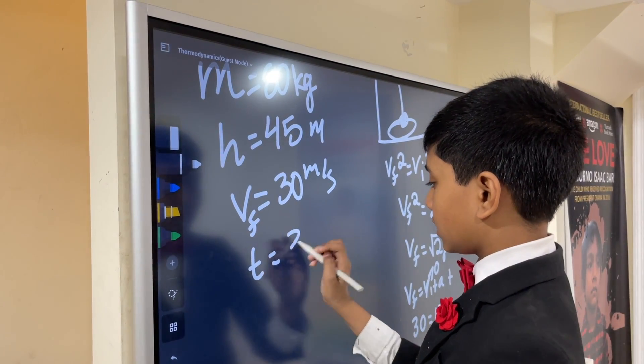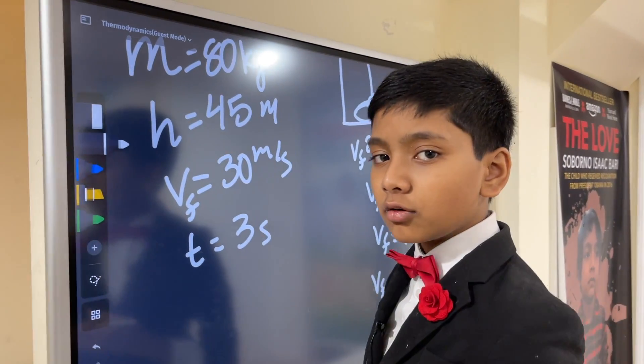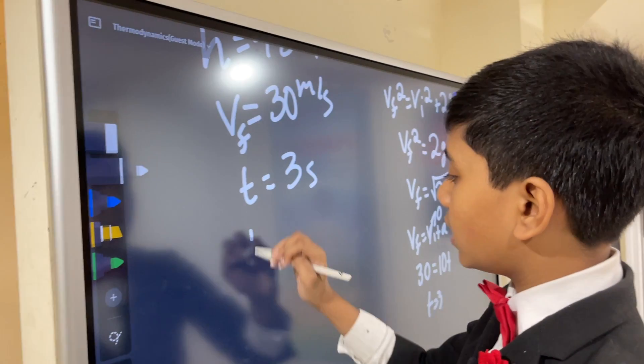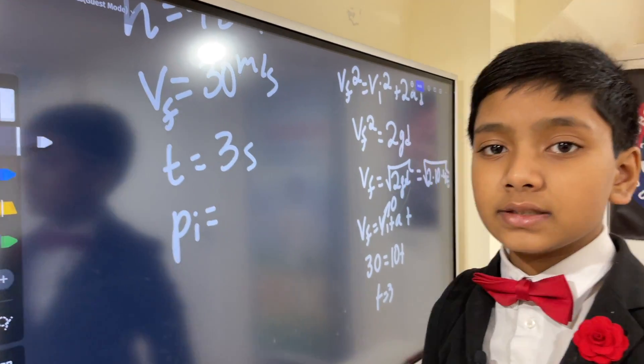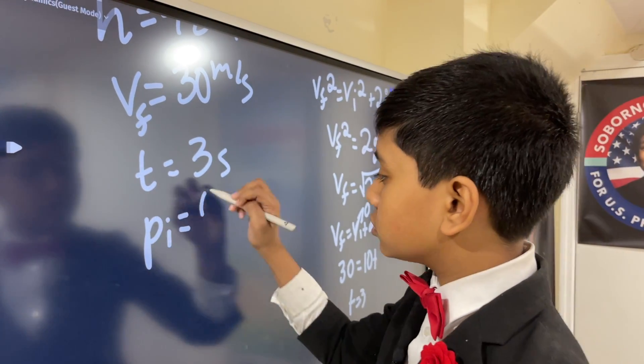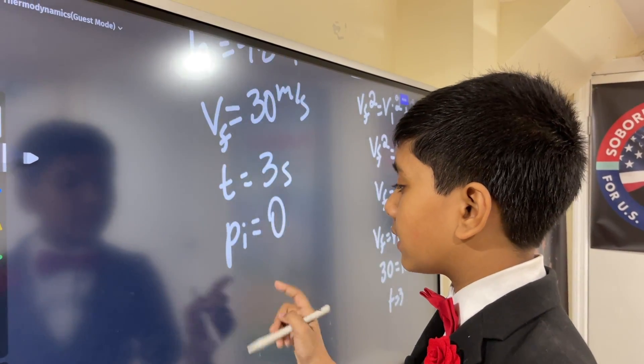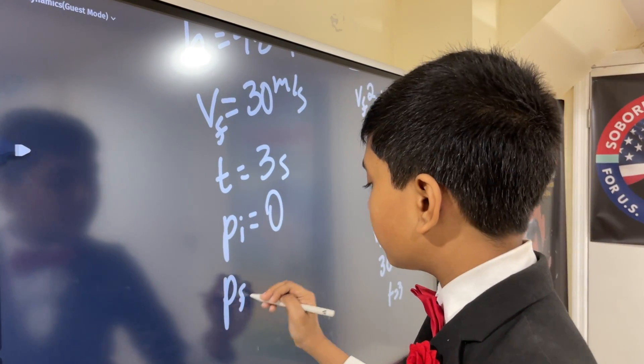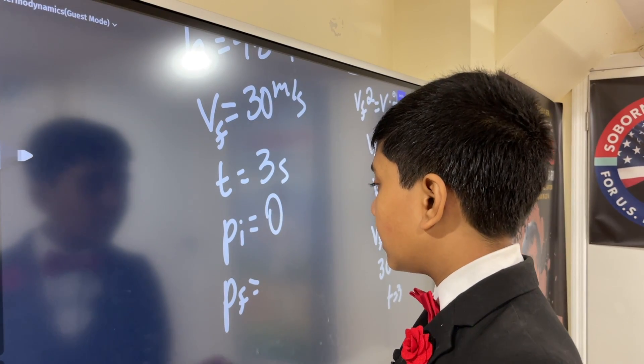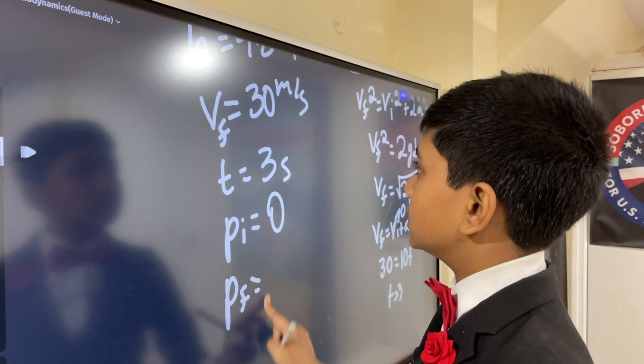So t is 3 seconds. Now, we're going to find the momentum initial and momentum final. So the momentum initially, since their initial velocity is zero, is also going to be zero because momentum is mv. The momentum final, on the other hand, is going to be m, which is 80 kilograms,